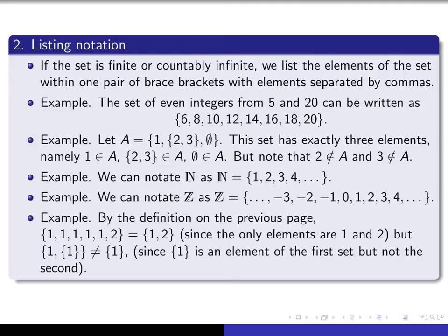Now here's an example where we look at the meaning of equality of two sets. If you look at the set on the left and ask what its elements are, you'd have to say 1 and 2, and you can't find any other elements. That's exactly the same as the elements of the set on the right, so these two sets are equal — it doesn't matter that you've written an element more than once. On the other hand, these two other sets are not equal, because the set consisting of the element 1 is an element of the left-hand side but not of the right-hand side, and therefore those sets are different.